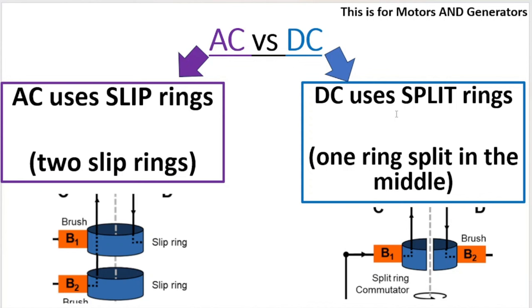A DC motor and a DC generator will make use of a split ring. That is one ring that has a split in the middle like this. You can clearly see the difference between slip rings and split rings.